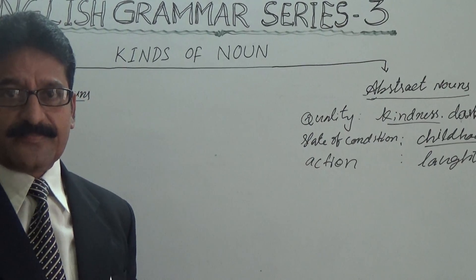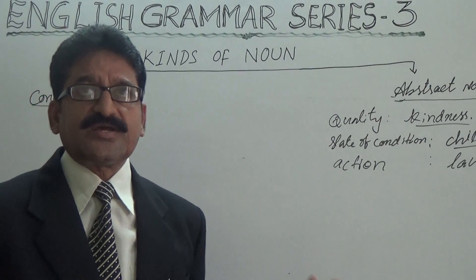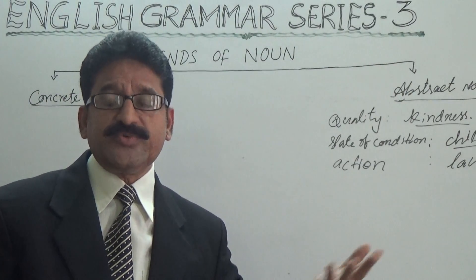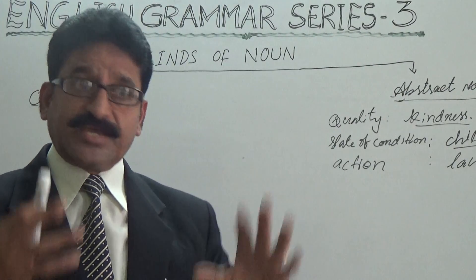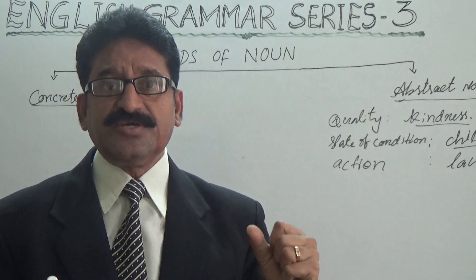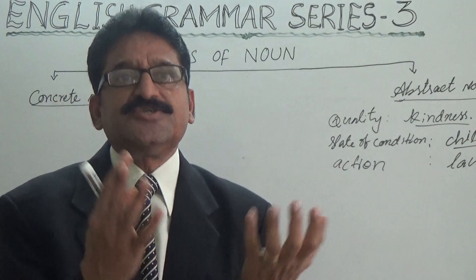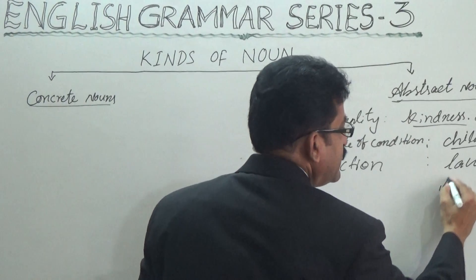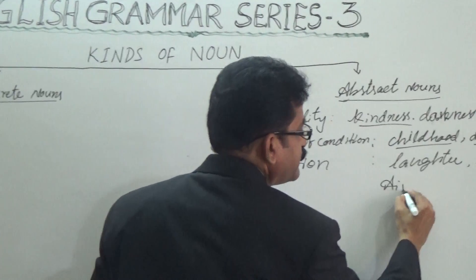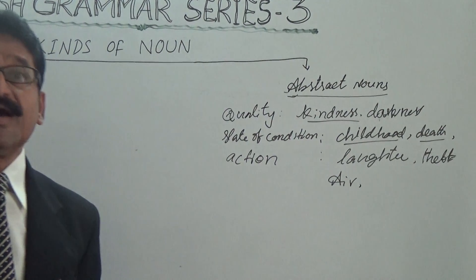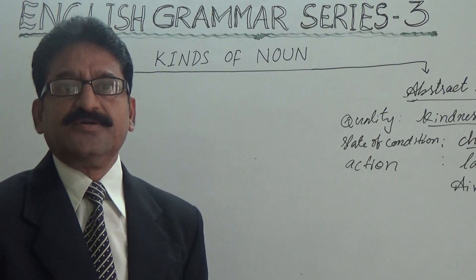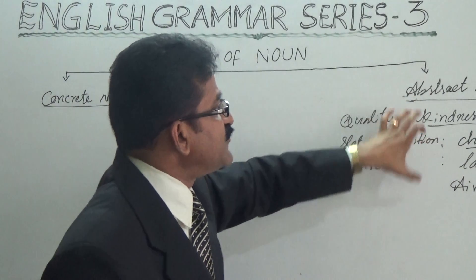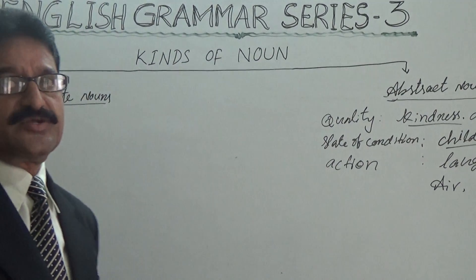For example, air. Air — we are consuming it every minute, every second, without which we cannot live. But can we see it? Can we touch it? Can we handle it? No. That is why air is called abstract — it is not physically existing. Such kind of nouns are called abstract nouns.